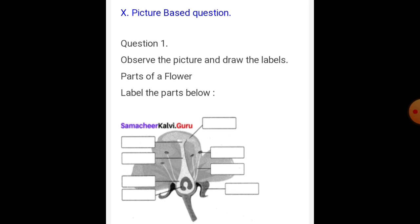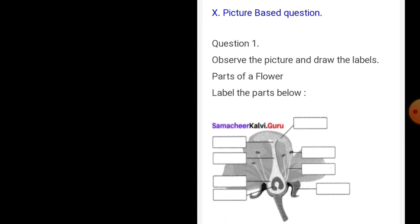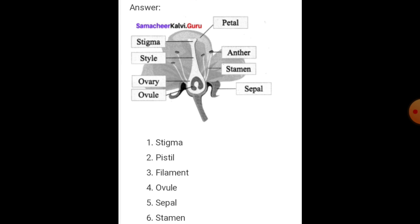Picture-based question: observe the picture and label the parts of the flower. The parts are: petal, stigma, style, and anther. Then: stigma, pistil, filament, and ovule.